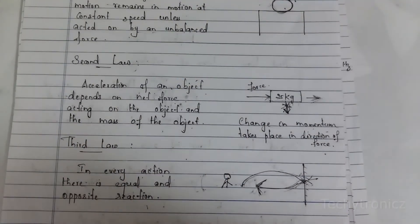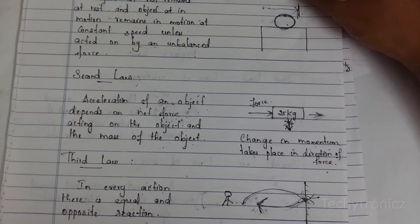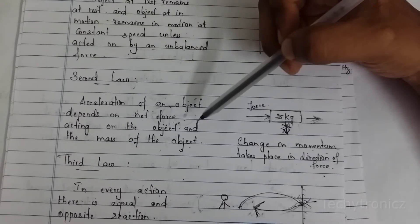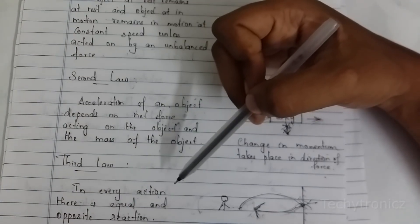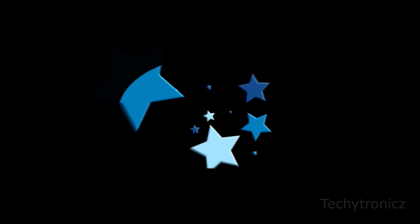In this video we have seen Kepler's three laws: the first law is law of orbits, second law is law of area, and the third law is law of period. And we have seen Newton's three laws of motion: first law — object at rest remains at rest until force is applied; second law — depends on the force acting on the object and mass of the object; third law — every action has an equal and opposite reaction. Hope you all understand. Thank you.